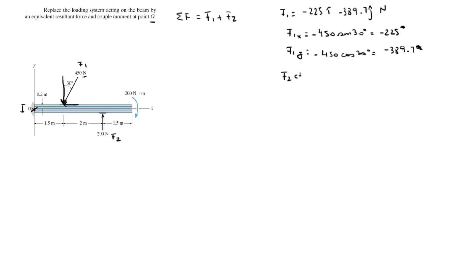Let's do F2. F2 is going straight up. Add 200J. So, F2 is simple enough. So, when you add the I's with the I's and the J's with the J's, you're going to get that the resultant force is equal to negative 225I minus 189.7J.